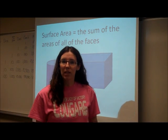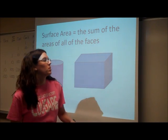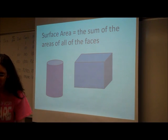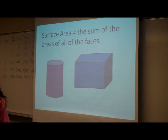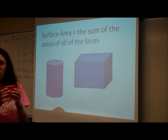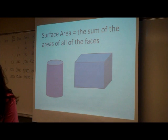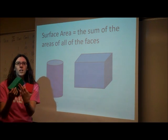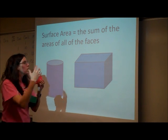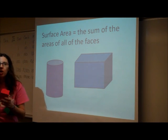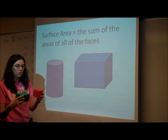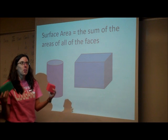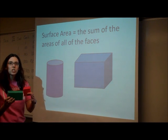We're going to start by talking about the surface area of rectangular prisms. But before we do that, let's just go over what surface area is. If you look at any solid — a cube, a rectangular prism, a cylinder, or a pyramid — the surface area is the area of the actual surface of that shape. How much would it take to cover it? Think of wrapping paper or painting it. We're just looking at the outside.